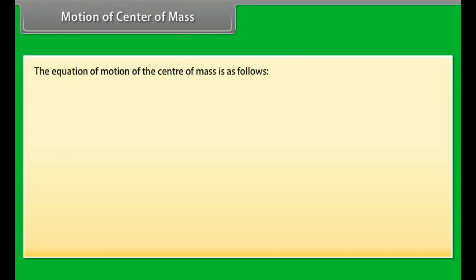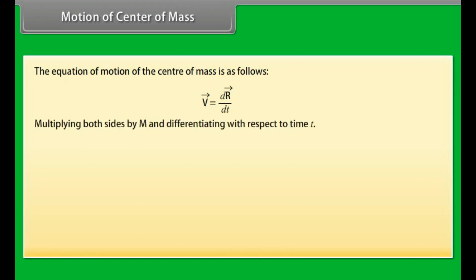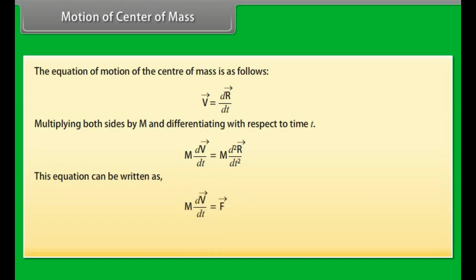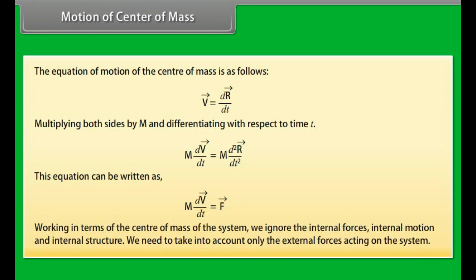The equation of motion of the center of mass is: v⃗ = dr⃗/dt. Multiplying both sides by m and differentiating with respect to time t, we get m·dv⃗/dt = m·d²r⃗/dt², which can be written as m·dv⃗/dt = F⃗. Working in terms of the center of mass, we ignore internal forces, internal motion, and internal structure, and take into account only the external forces acting on the system.